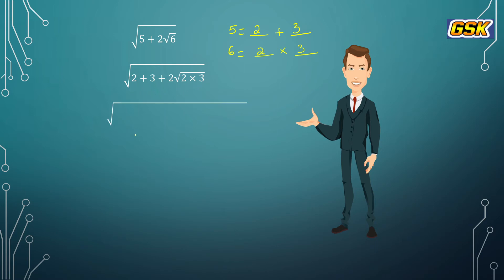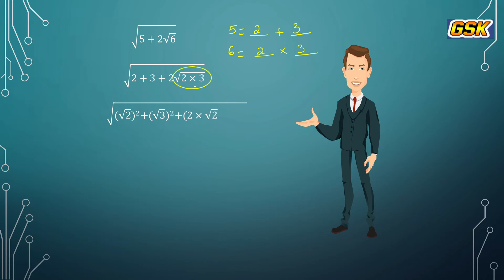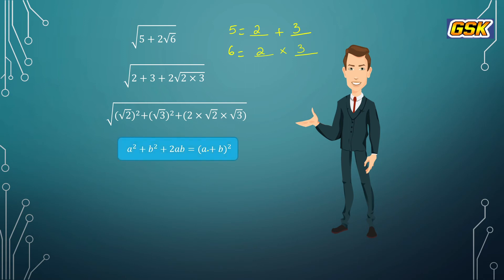Now 2 can be written as root 2 whole square, and 3 can be written as root 3 whole square, and 2 into root 2 into root 3 fits the form a squared plus b squared plus 2ab, which equals a plus b whole square.